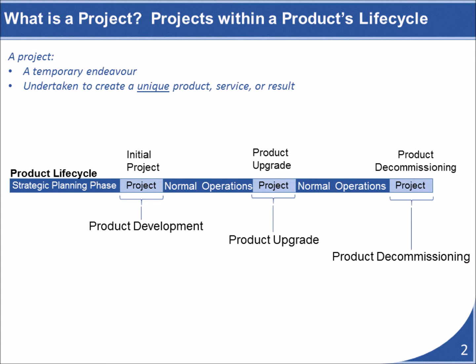A product's life cycle begins when an organization wants to create something new. They will launch a project to develop this new product. Once the product has been developed, the organization enters into what's called its normal operation phase where it's producing these products. While initially creating the product would be considered a project, the ongoing mass production of the product would not be considered a project as it is no longer a unique undertaking.